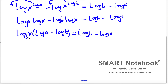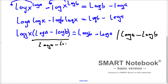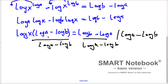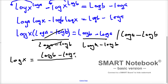Now we can divide everything by log a minus log b. We divide both the left side and the right side by log a minus log b. When we do that, the (log a minus log b) terms cancel on the left, and we have log x equal to (log b minus log a) over (log a minus log b).